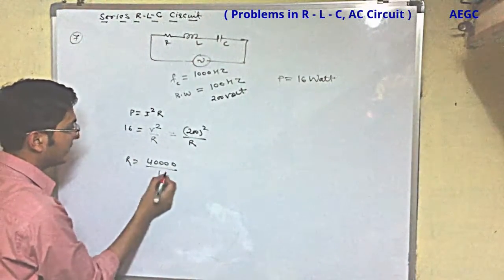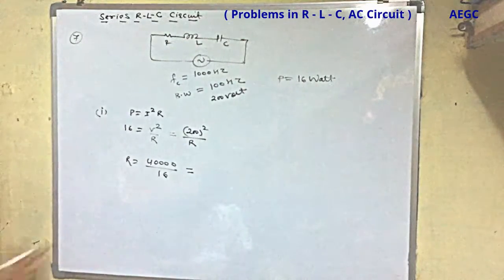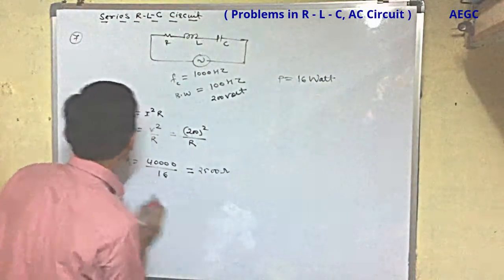Using the power formula, R = V²/P, we get R = 200²/16 = 2500 ohms. This is the resistance.